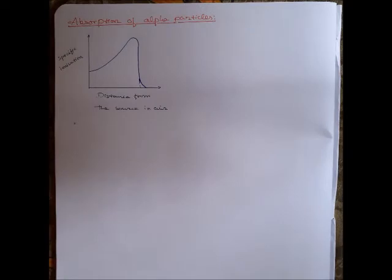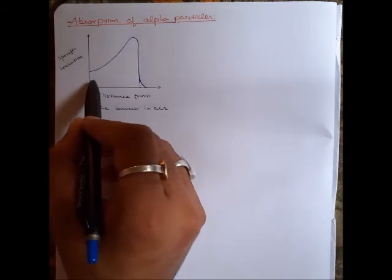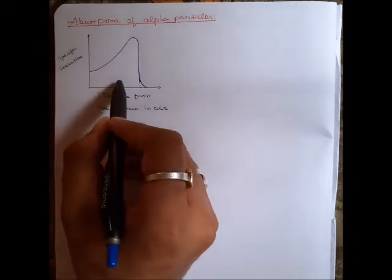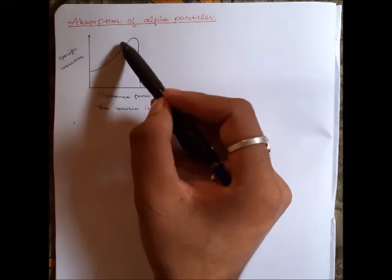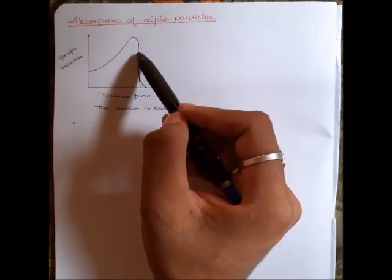As the alpha particle proceeds through the medium, it produces ion pairs. Its energy and speed decrease steadily, and with reduction of speed, the rate of producing ion pairs increases. Therefore, after traveling a certain distance, the alpha particle speed has reduced significantly, which gives the maximum specific ionization.